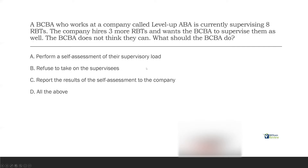From the ethical code: A — perform a self-assessment of their supervisory load. Yes, this is mentioned in the ethics code; they need to perform a self-assessment. B — refuse to take on the supervisees. Also from the ethical code: you should only supervise as many RBTs as you are capable of. If you don't think you can and your self-assessment indicates that, you shouldn't take them on. And C — report the results of the self-assessment to the company, also from the ethical code. You need to report the results; you can't just do the assessment and not give the results.